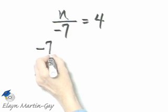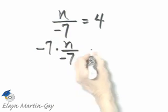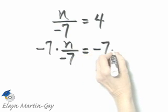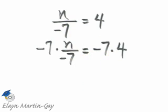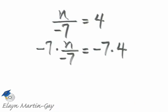So that's negative 7 times this left side, n over negative 7, and then negative 7 times the right side of 4. And I can multiply both sides by negative 7 by the multiplication property of equality.